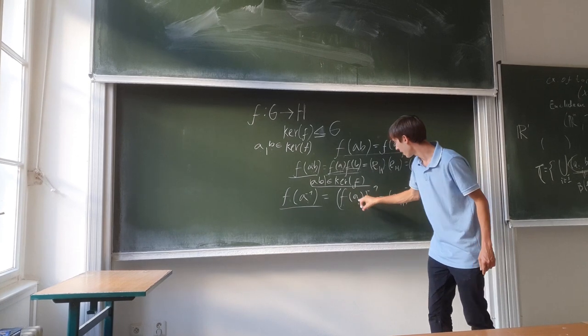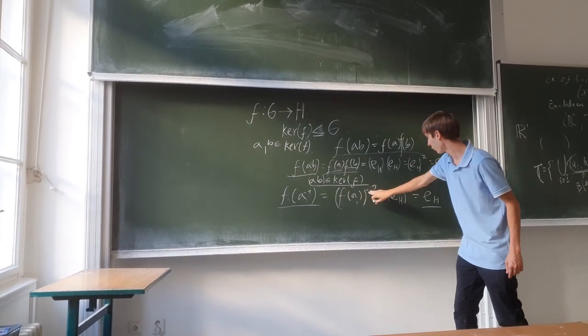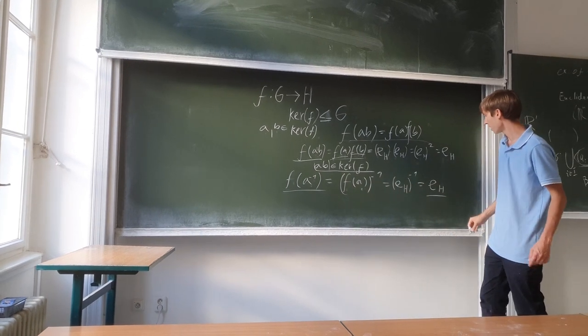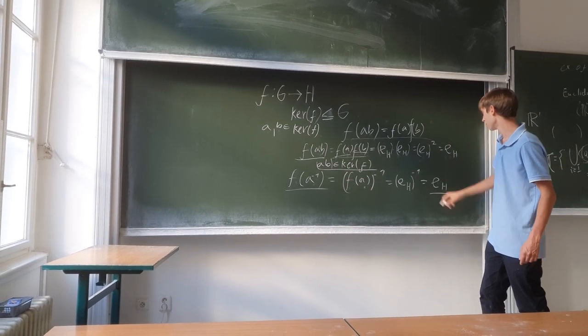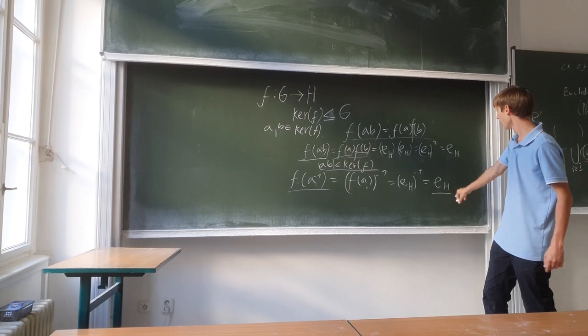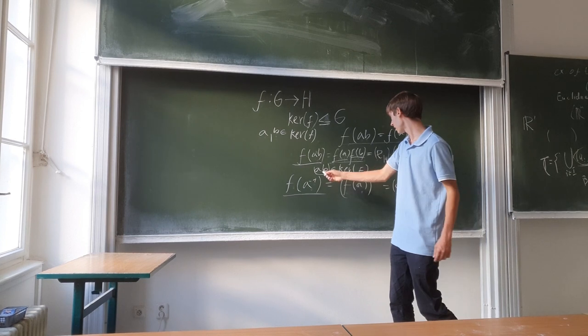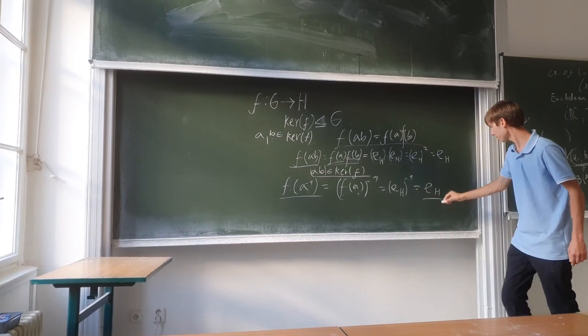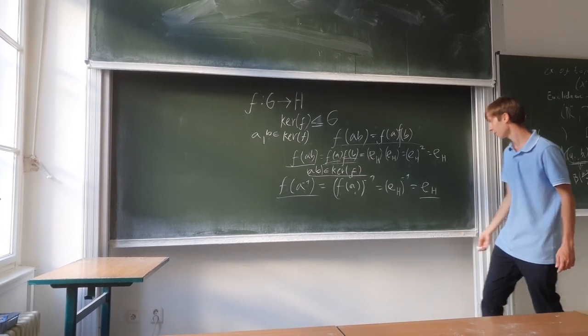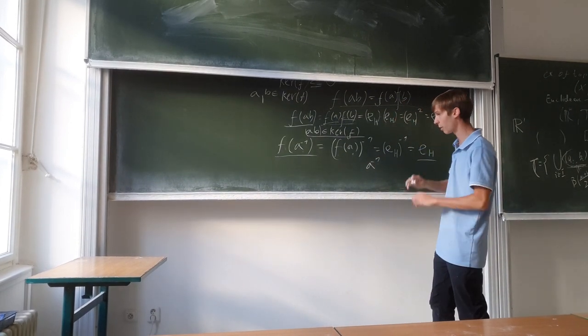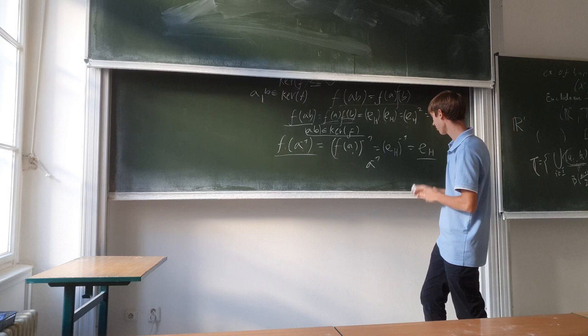Also, the inverse of a - f(a^-1) is the same as (f(a))^-1. We know that this will be the identity element inside H, and that inverse will be e_h again. So we know that the inverse of a is inside kernel f. This tells us that the inverse element of some arbitrary element a inside kernel f will again belong to kernel f.